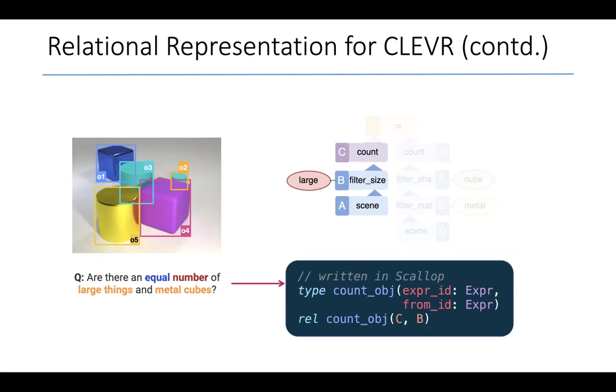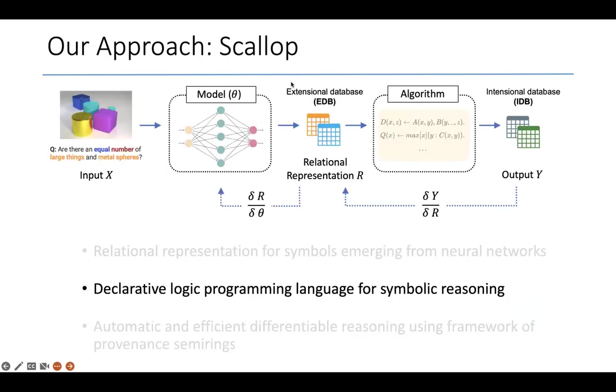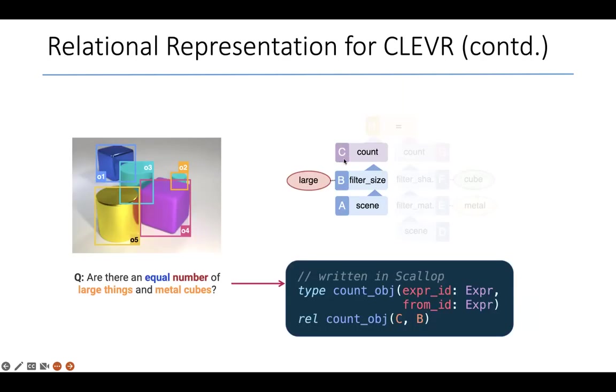We can continue this way. For example, if I'm looking at AST nodes of type count, I can define a relation which says that expression ID C is of type count, and it seeks to count the objects described by the expression ID B. This entire chain that you see here evaluates to the number of large objects in the scene.